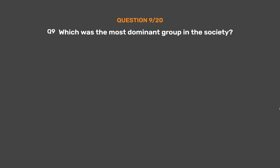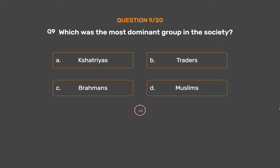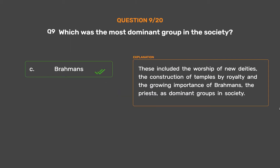Question 9: Which was the most dominant group in society? Option A: Kshatriyas. Option B: Traders. Option C: Brahmins. Option D: Muslims. The correct answer is Option C: Brahmins. This included the worship of new deities, the construction of temples by royalty, and the growing importance of Brahmins — the priests — as the dominant group in society.